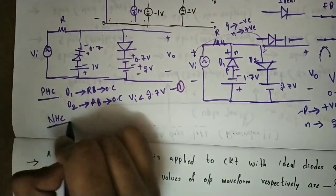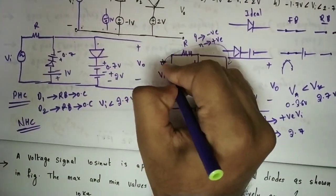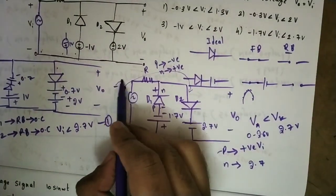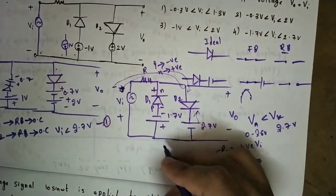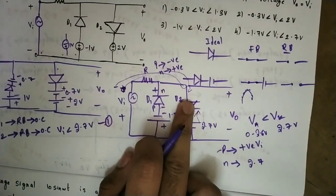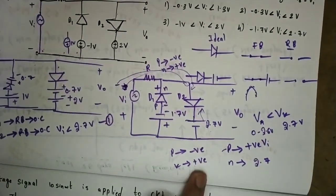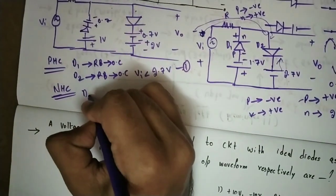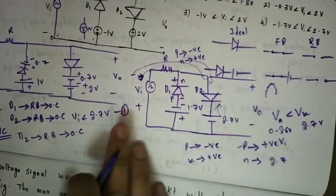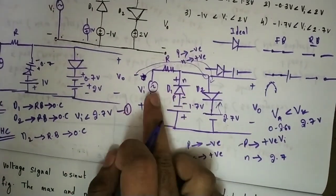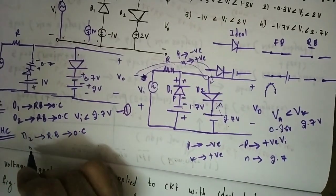Now we consider the negative half cycle. In the negative half cycle the polarity reverses — minus on one side, plus on the other. For D2: P side is negative, N side is positive, meaning anode is negative and cathode is positive, so D2 is reverse biased and acts as open circuit.